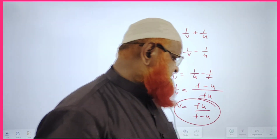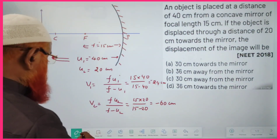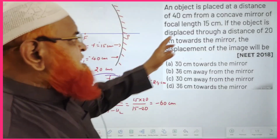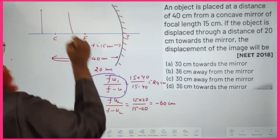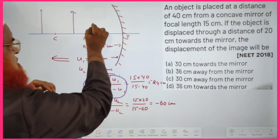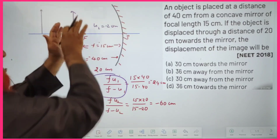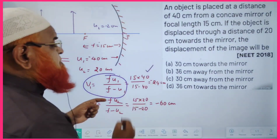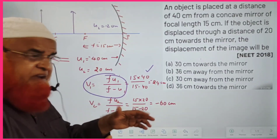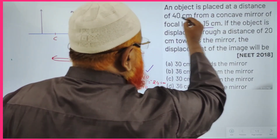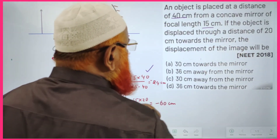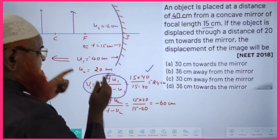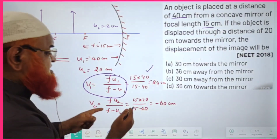Using this shortcut, we apply v = fu/(f − u) twice. First, with u1 = 40 centimeters (original position) and f = 15 centimeters. Then the object is shifted toward the mirror so u2 = 20 centimeters, because when shifted by 20 cm, the remaining distance is 20 centimeters. We substitute both values into the formula.